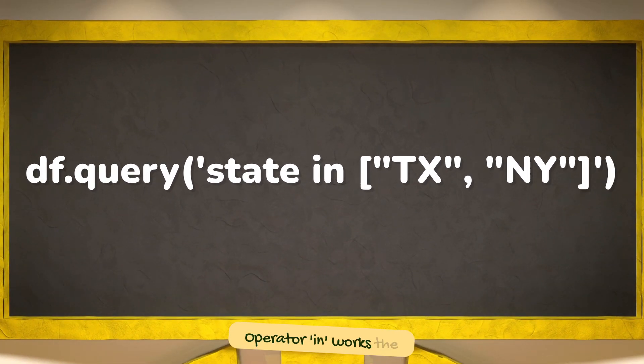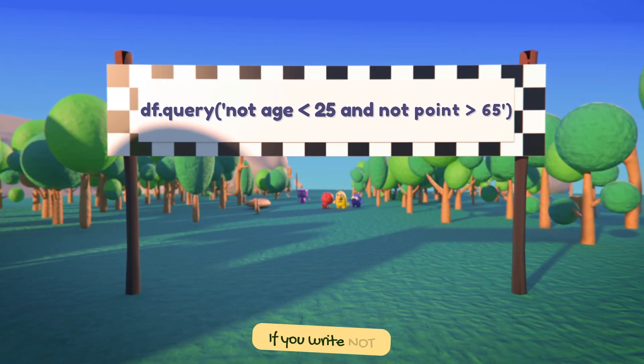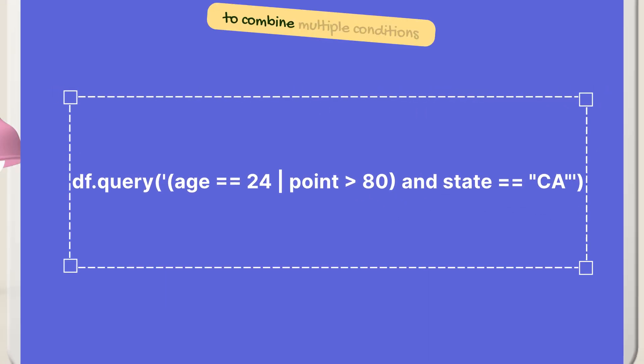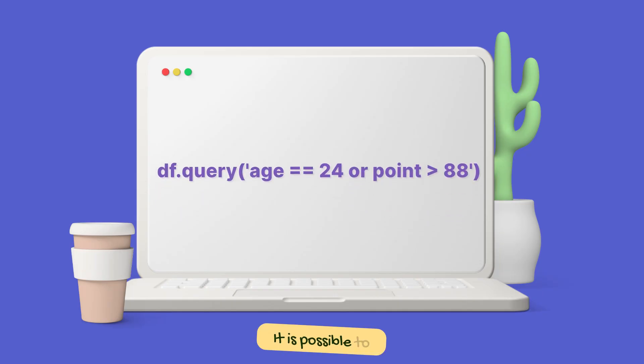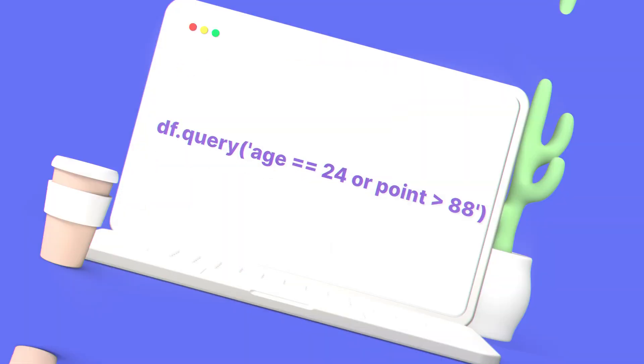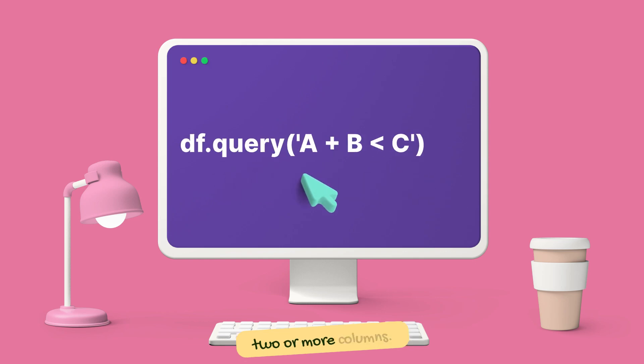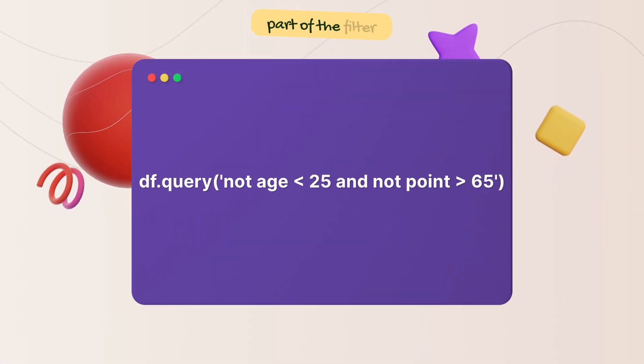The operator 'in' works the same way as 'is in'. If you write 'not' before a column name, you will get corresponding instances. The query method allows you to easily combine multiple conditions using 'and'. It is possible to use the 'or' logic to combine multiple conditions as well. We can also create a condition that compares two or more columns. The not operator can also be implemented as part of the filter in the query method.